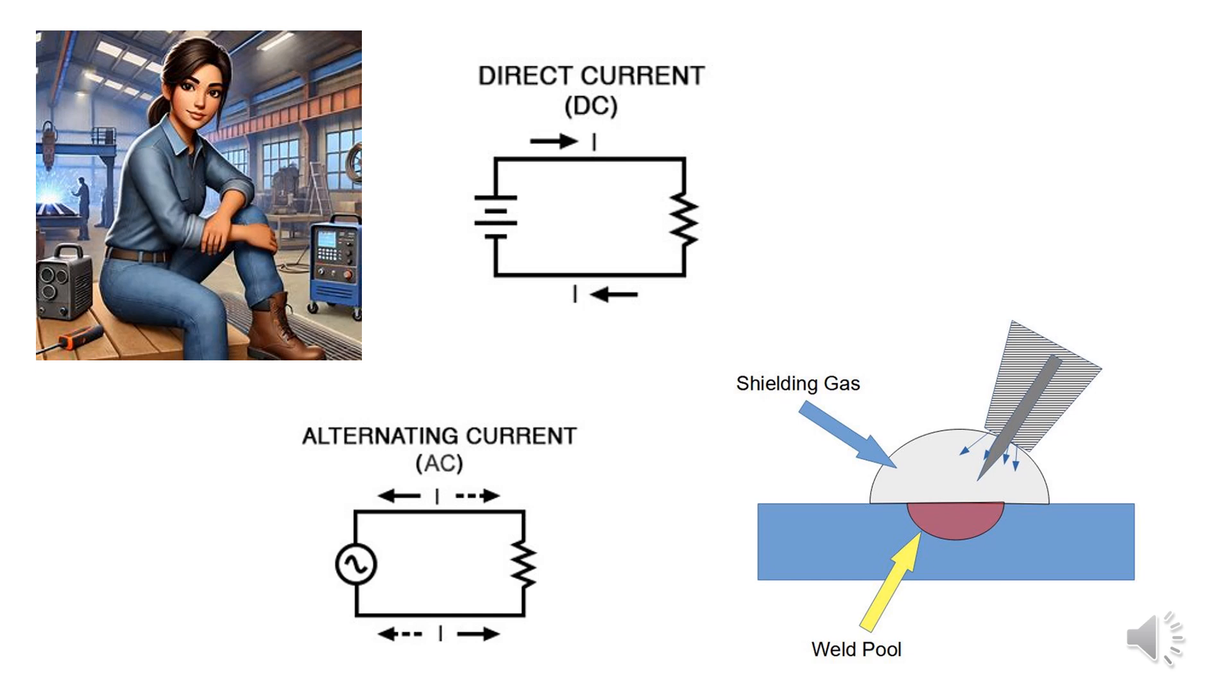The basic GTAW process utilizes an intense arc between the base metal and a tungsten electrode. The arc, electrode, and weld zone are surrounded by an inert gas, such as helium, argon, or a combination, which displaces air and prevents contamination by atmospheric oxygen and nitrogen. Due to the tungsten electrode's high melting point, it remains virtually non-consumable. Advantages of GTAW: Welding can be performed in all positions. The weld typically matches the composition of the base metal. No flux is required, so there are no corrosive residues to clean. The process produces no smoke or fumes, allowing for clear visibility of the weld area. Heat is concentrated in a small area, minimizing base metal distortion. There is no spatter, as metal is not transferred across the arc.